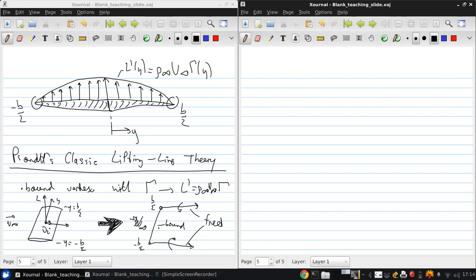This is basically done by representing the wing by the superposition, because we're using potential flow modeling, we can superimpose solutions. Basically, we want to superimpose a large number of these horseshoe vortices, each with a different bound vortex strength, and so we end up with something like this.